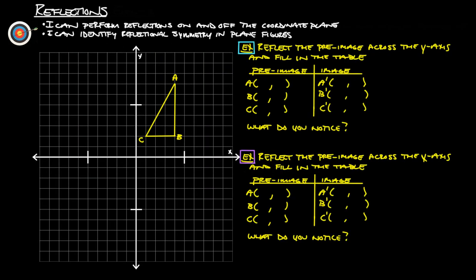Let's take a look at an example. We're going to reflect the pre-image across the y-axis and fill in the table. Here's our y-axis, so we're going to reflect this figure over it. Starting with the short distance: C is a distance of 1 from the line, so C prime is going to be 1 unit on the other side. B is 1, 2, 3, 4 spots from the line of reflection, so B prime will be 1, 2, 3, 4 spots on the other side. And A is also 4 units away, so A prime will be 4 units over here as well.